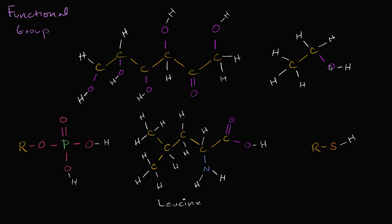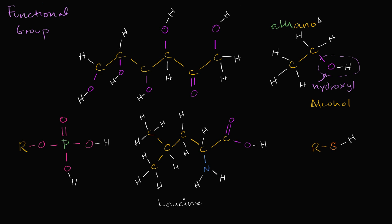The first one I'll focus on is an OH group — an OH attached to a carbon backbone. This is called a hydroxyl group. When it is attached to a carbon backbone, it turns the entire molecule into an alcohol. This one in particular has two carbons along its longest chain, so we use the prefix 'eth' and call it ethanol, which you might more commonly know as rubbing alcohol.